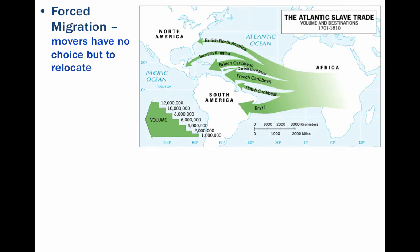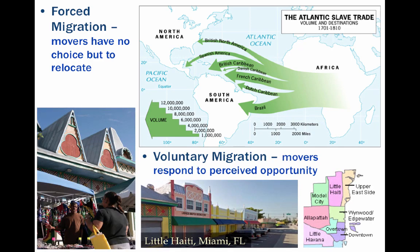There is a stark difference between forced migration, where the movers have no choice — such as the estimated more than 10 million Africans who were forced across during the slave trade — and voluntary migration, where movers respond to perceived opportunity and push and pull factors, such as the concentration of Haitians in Miami.